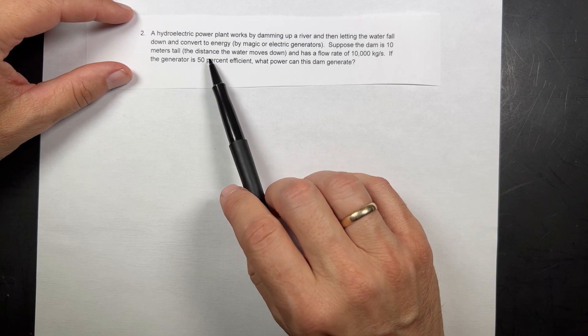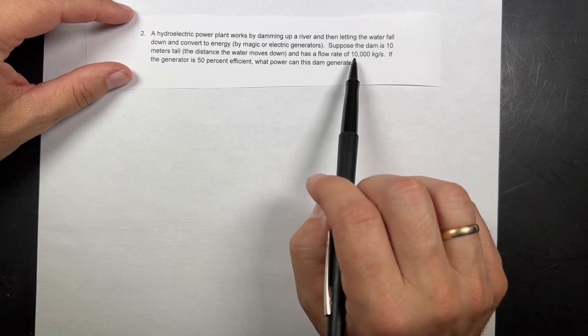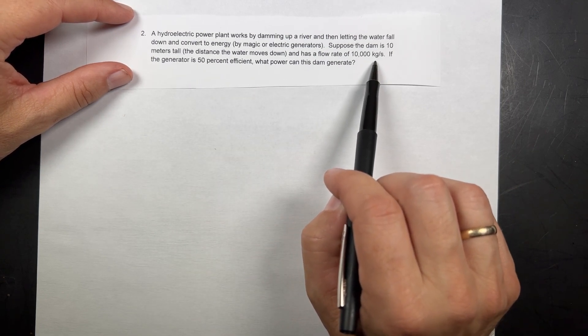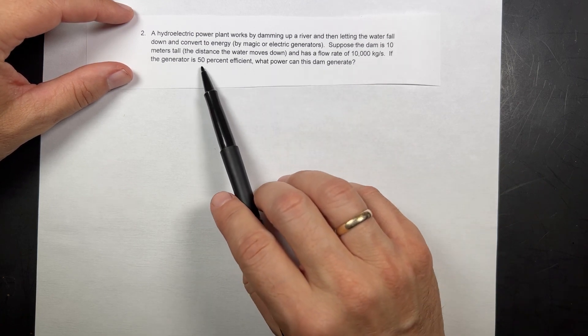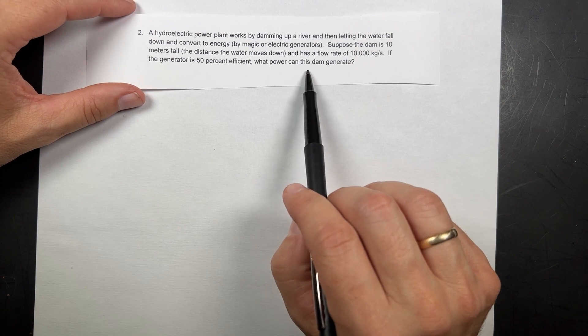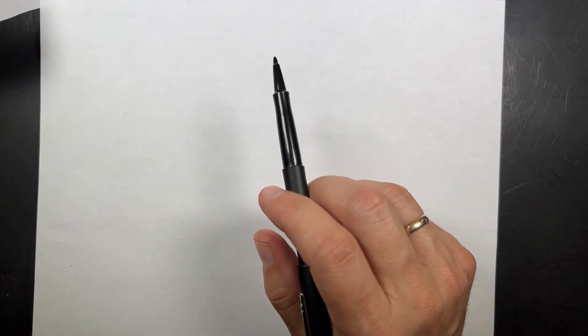Suppose the dam is 10 meters tall and has a flow rate of 10,000 kilograms per second. So that's the mass per second of the water. If the generator is 50% efficient, what power can this dam generate? Okay, so let's draw a picture.